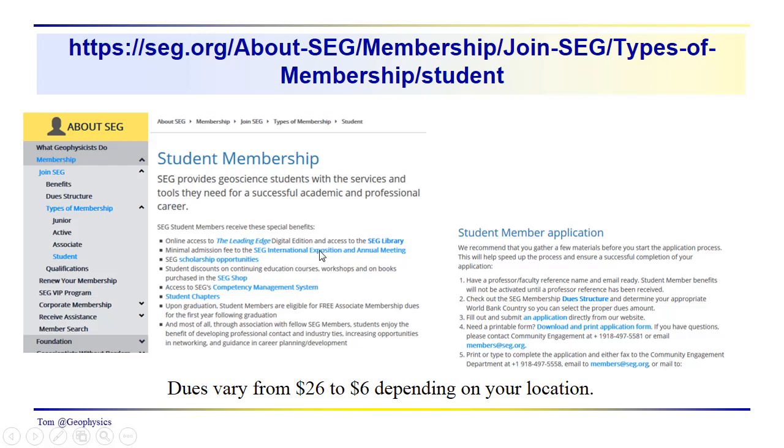You get reduced admission fees to the international exposition annual meetings, and I'm sure that applies to regional meetings, scholarship opportunities, workshops. There are student chapters probably in your area. I definitely encourage you to do this. The annual meetings are just a wonderful experience - you'll learn so much talking with other people, listening to papers. I find it particularly interesting and spend most of my time in the exposition halls where companies demonstrate the latest developments. Really consider this - it's well worth the $26 to $6.